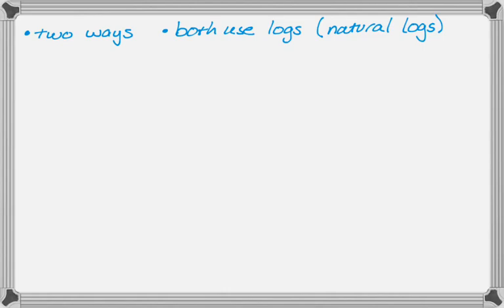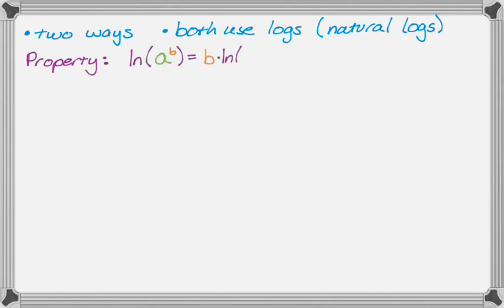For the first method, we definitely need to know one of the properties of logs: the natural log of a to the b is equal to b times the natural log of a. I always say that exponents become coefficients when you're dealing with logs.